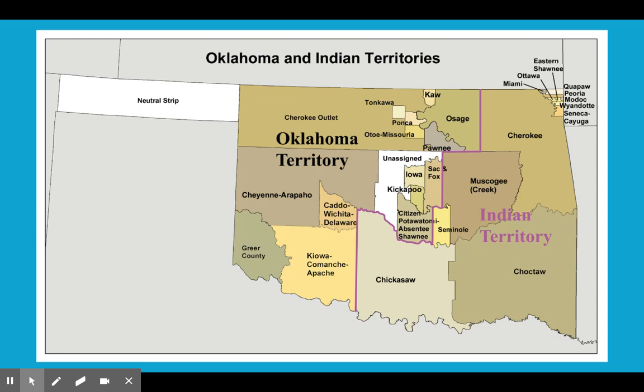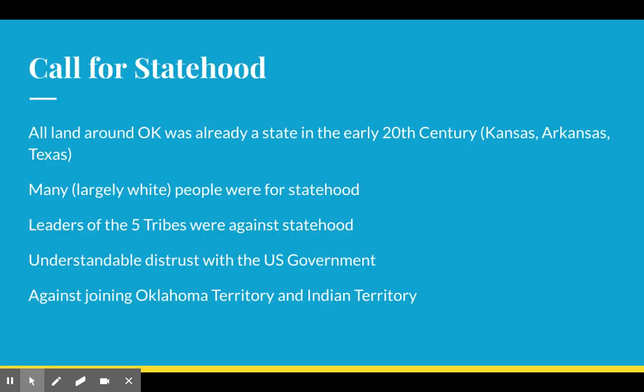So two territories — Oklahoma and Indian Territory and the Panhandle — will become the state of Oklahoma in 1907. There are many people in and around Oklahoma that are going to call for statehood around this time.